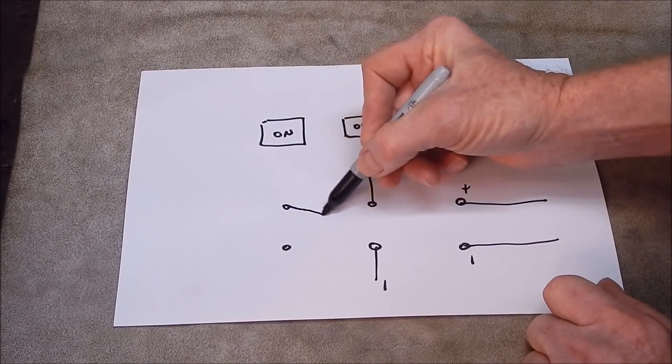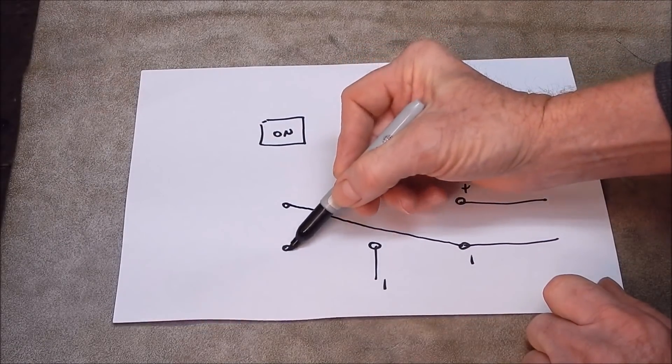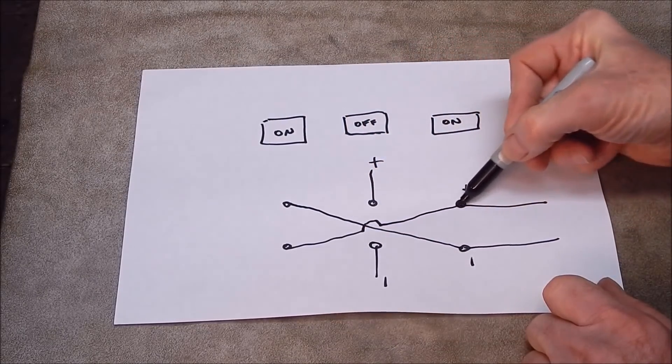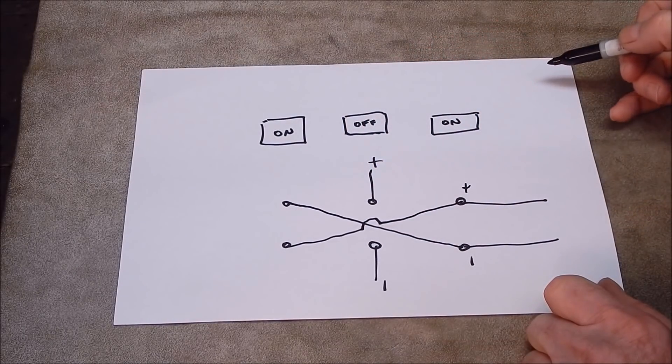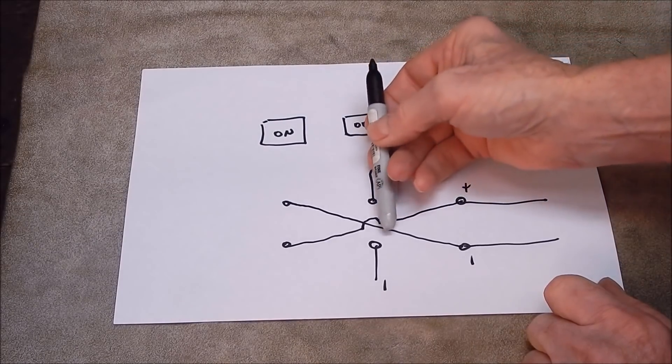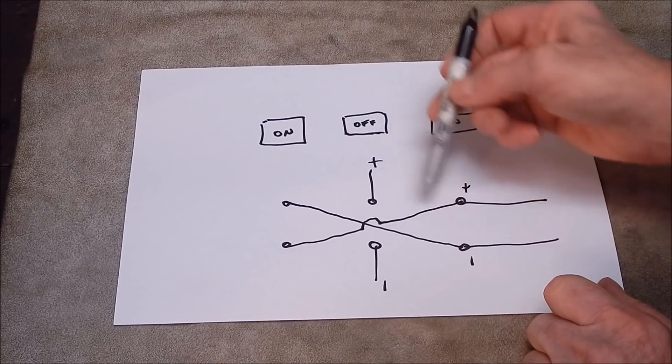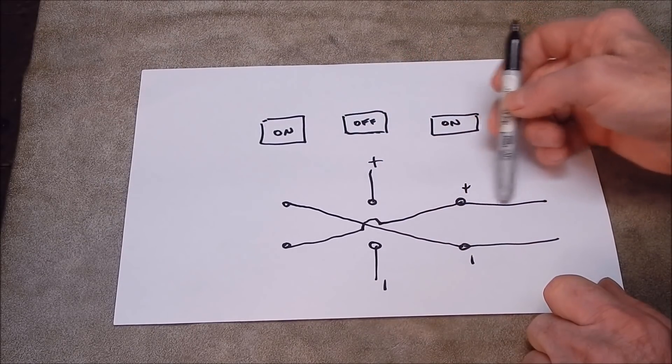So how do we reverse it? It's really quite simple. We run a wire from here across to here and from here across to here. Now let's look at what happens again. We throw the switch this way. Negative becomes negative, positive becomes positive. The motor runs.